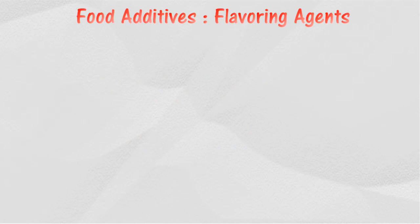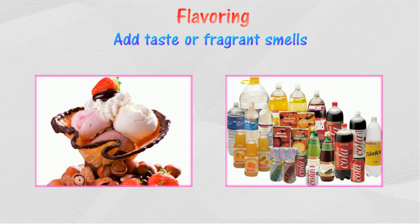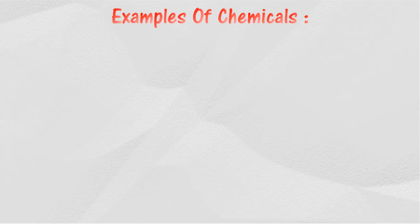Food additives: flavoring agents. Flavoring agents are additives that give food a particular or fragrant smell to make food more edible. Flavoring agents are often found in foods rich in various flavors, such as ice cream and soft drinks. Flavor may be derived from natural ingredients or created artificially. Here are a few examples of chemicals used in the flavoring process.